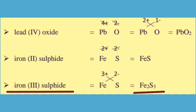For iron(III) sulfide, Fe has oxidation number 3 plus and sulfide is S with oxidation number 2 minus. After crossing the numbers — 3 and 2 — the formula is Fe2S3.